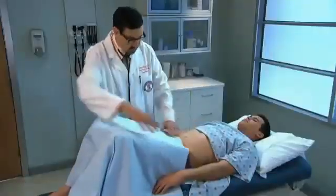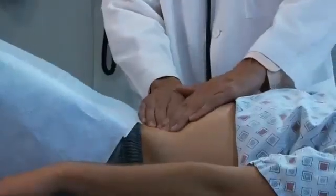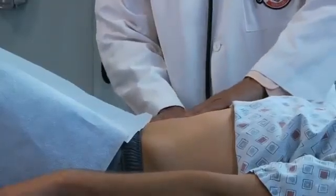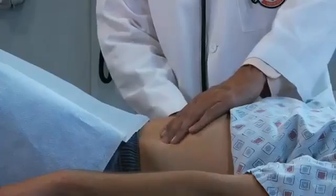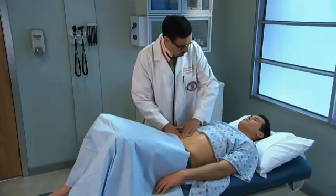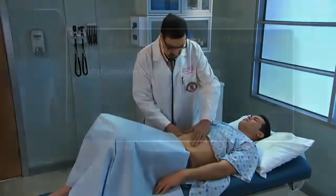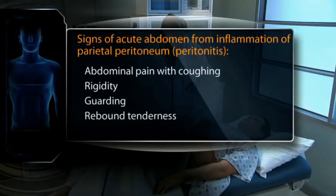Then, palpate by pressing more deeply in all four quadrants as you feel for any masses or tenderness, placing one hand on top of the other. Watch closely for signs of an acute abdomen from inflammation of the parietal peritoneum or peritonitis. Signs include abdominal pain with coughing, rigid or board-like abdomen, guarding, rebound tenderness, and percussion tenderness.